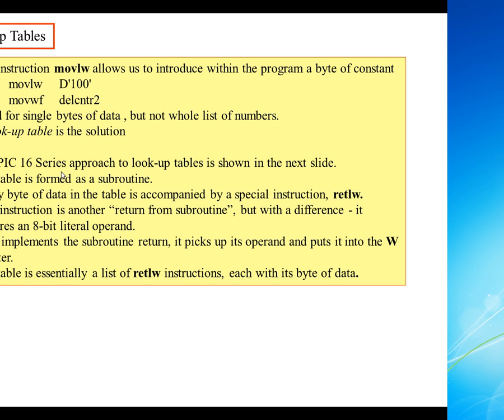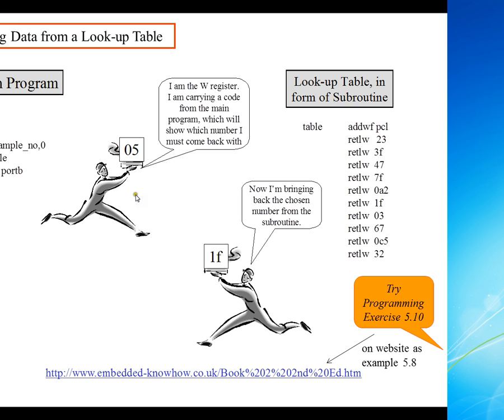The PIC16 series approach to lookup tables is shown in the next slide. The table is formed as a subroutine. Every byte of the data is accompanied by a special instruction called return literal W. This is a new instruction that we're learning today. This instruction is another return from subroutine, but it returns the literal value as part of the operand. The operand is what's returning to the W register. As it implements the subroutine return, it picks up its operand and puts it in the W register. The table is essentially a list of retlw instructions, each with its byte of data.